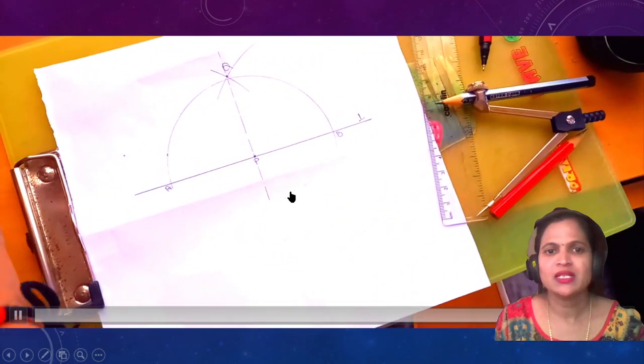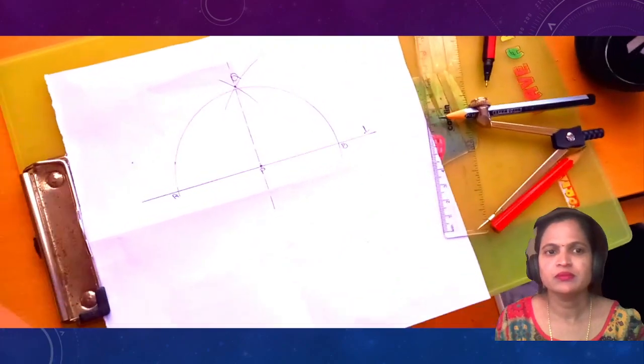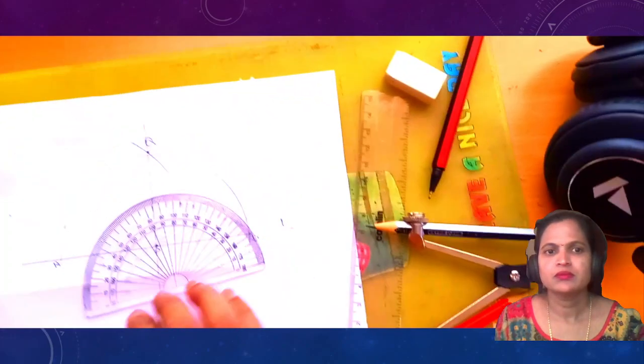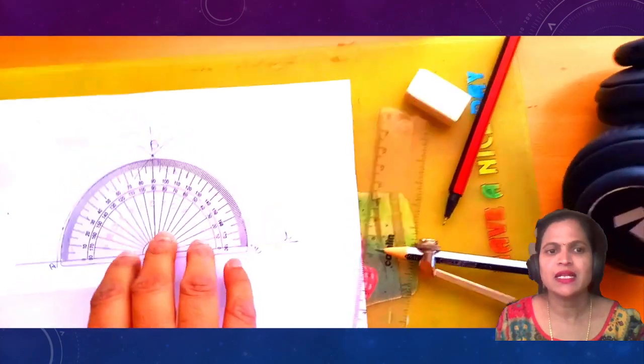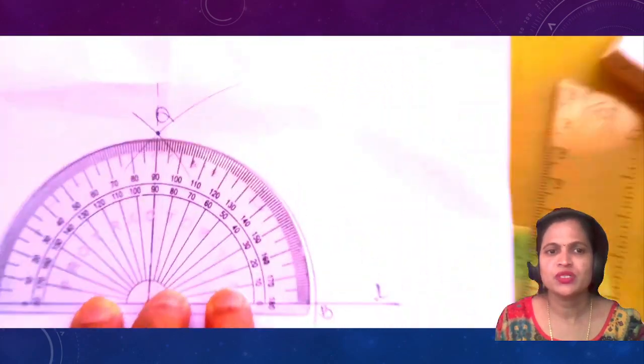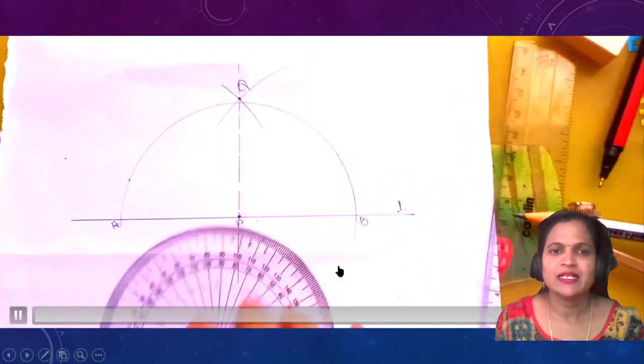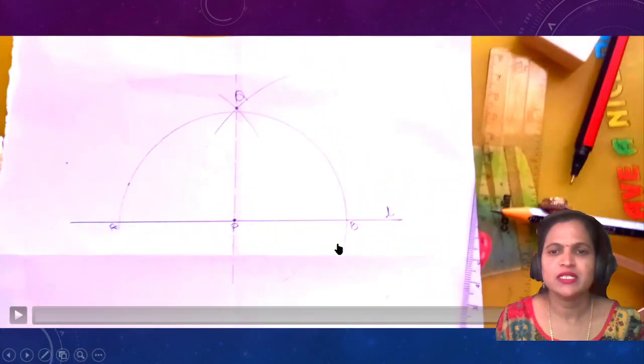Join QP. This will be perpendicular to line L. So it is exactly 90 degrees. Without using a protractor, you draw the line exactly at the angle of 90 degrees.